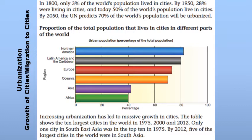This slide is about urbanization — the growth of cities as people migrate from rural areas into cities. In the early 1800s, around 3% of the population lived in cities. Once industrialization took place, there were more jobs, work opportunities, prosperity, better facilities, and social services in cities. People started to migrate from rural areas into the cities. By 1950, 28% of people lived in cities, and today that number has increased to 50%.